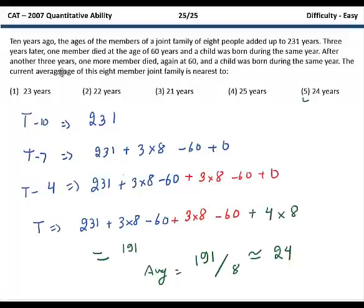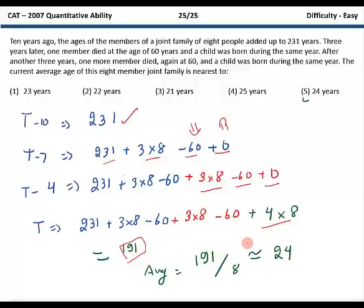This is the final question of the paper and it is an easy one. 10 years ago the average age of a family of 8 was 231. 3 years from then a 60 year old person died and a new person was born. So you can calculate the new total as 231 plus 3 times 8 minus 60 plus 0. 3 years after that again the same thing happened. So you again add 3 times 8 minus 60 for the person dying and plus 0 for the new person. And then 4 years ahead of that is the current date. So we add 4 times 8. That gives us the total age of the 8 people in the family. We have been asked to calculate the average age, so we just divide by 8 and get the final answer.